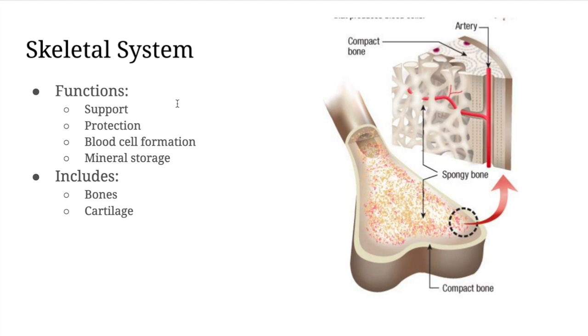Our bones also offer protection. So an example of that would be your skull, which is made of several bones, surrounds and protects your brain.